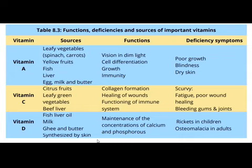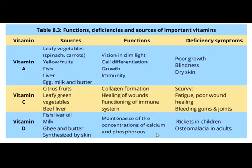The main function of vitamin D is the maintenance of the concentration of calcium and phosphorus in our body. These are two important elements maintained in the body. If vitamin D is reduced, diseases occur. In children, it is called rickets, where bones become weak. In adults it is called osteomalacia, a bone disease in aged people.